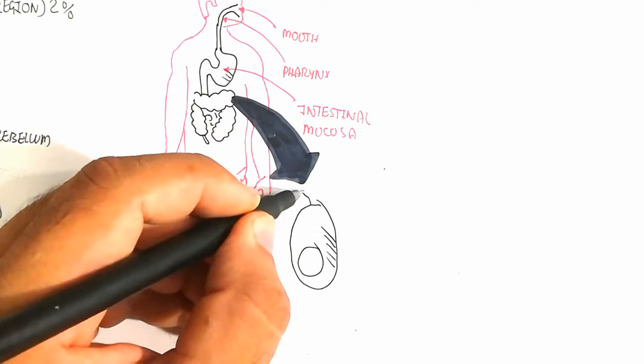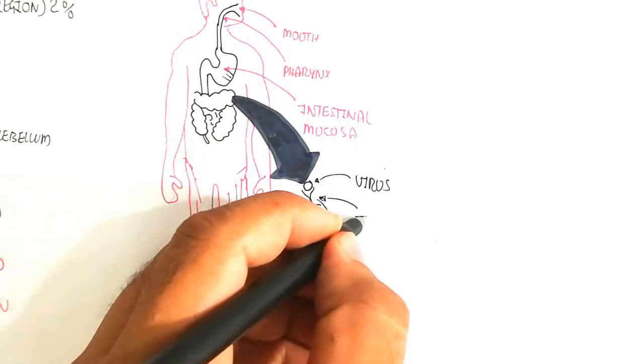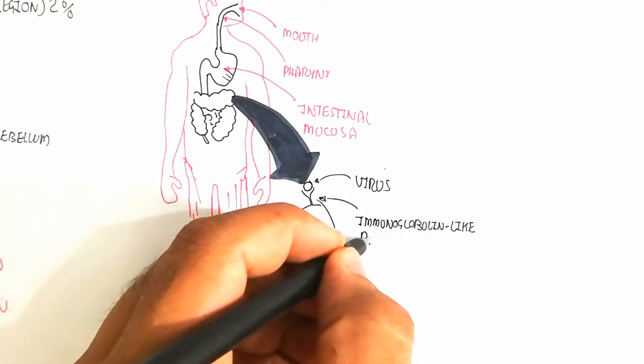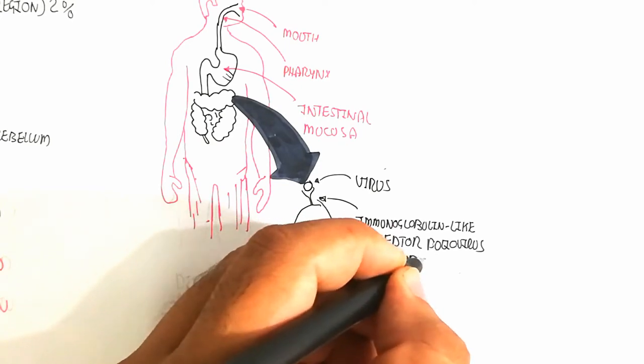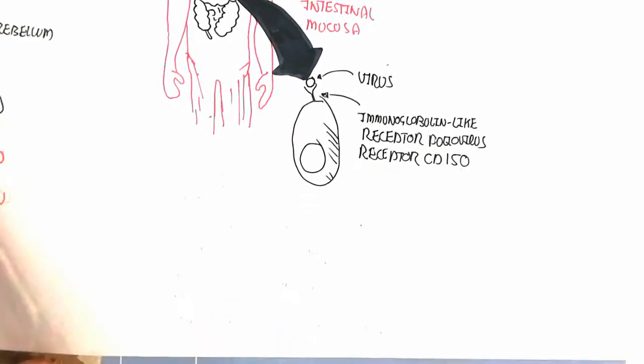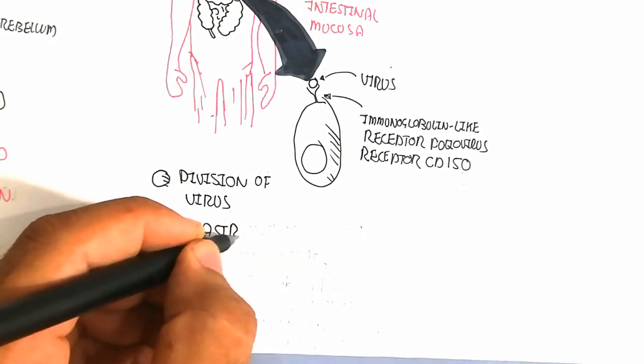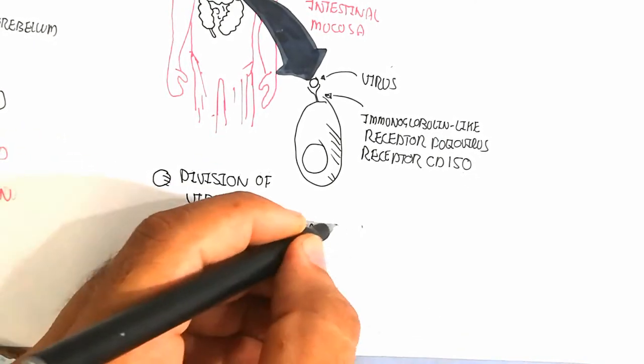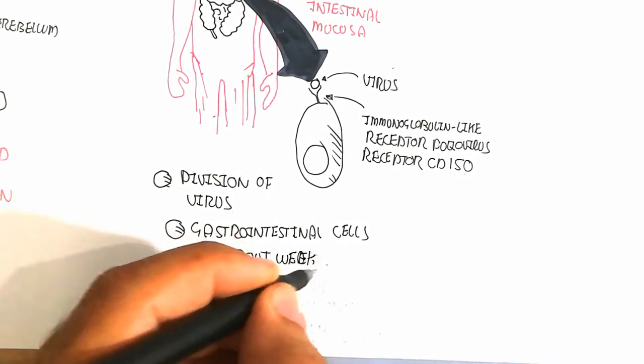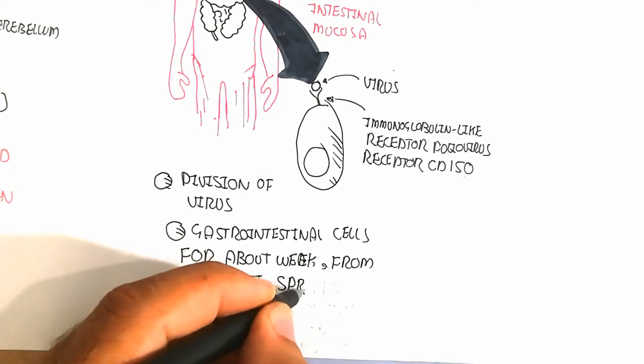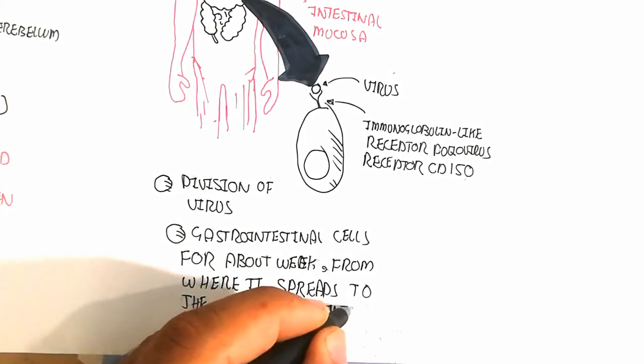The cells of the gastrointestinal tract contain a receptor known as the immunoglobulin-like receptor, which requires a CD150 receptor. The virus will be attached and division of virus occurs in the gastrointestinal cells for about a week, from where it spreads to the tonsils and intestinal lymphoid tissue.